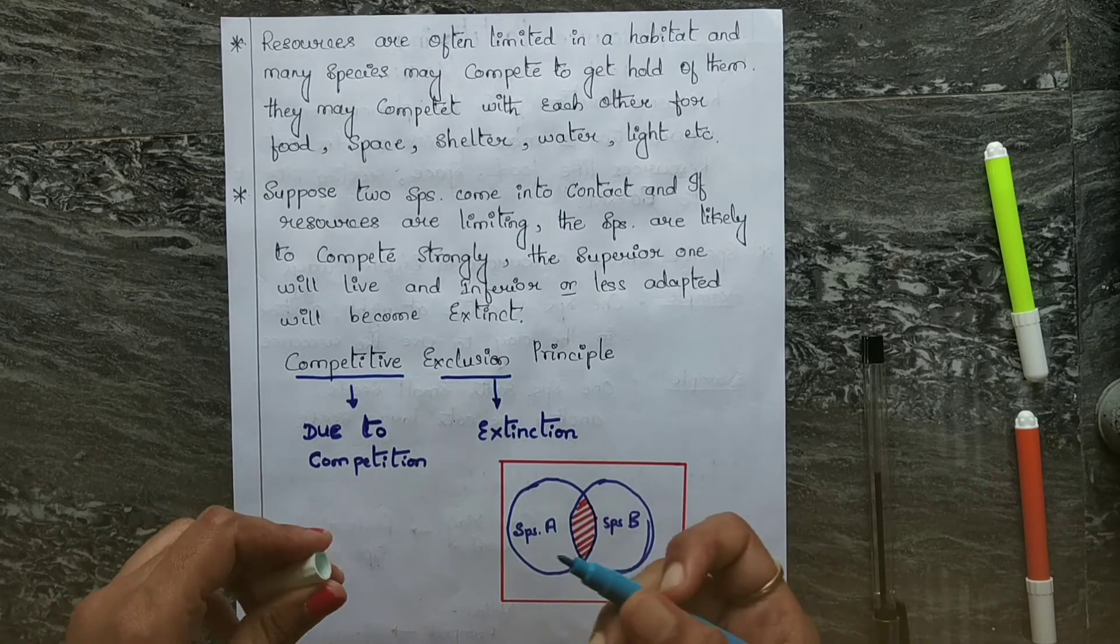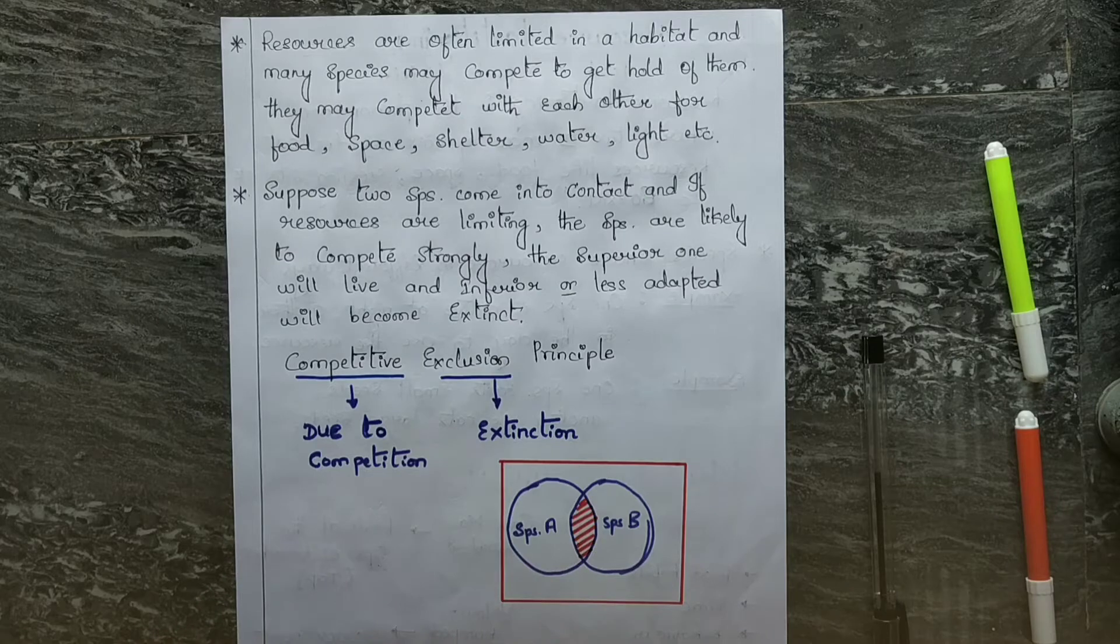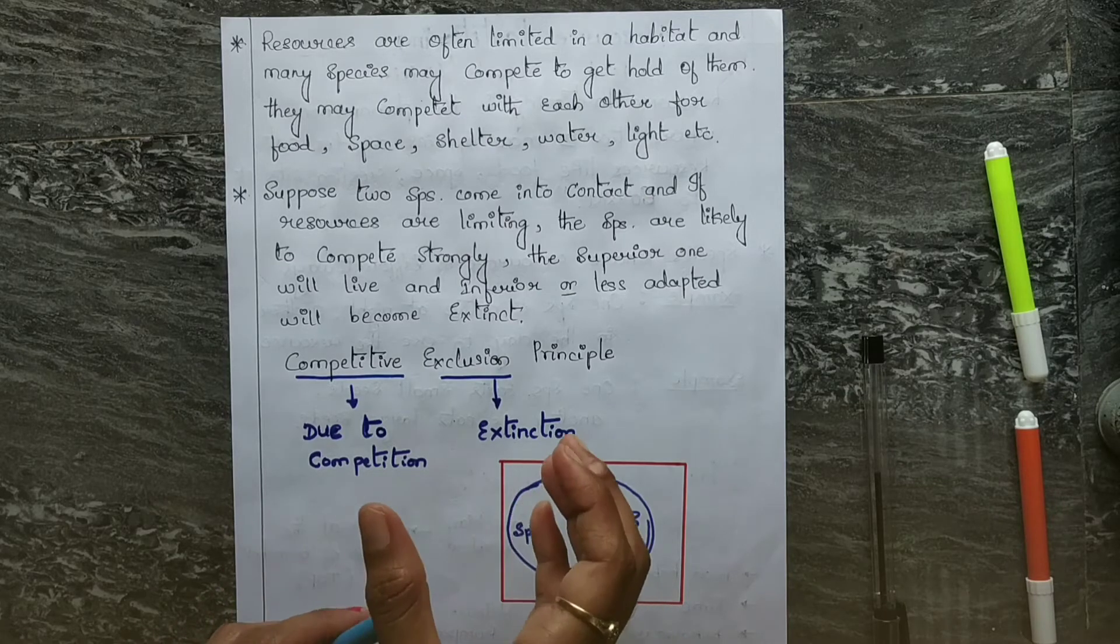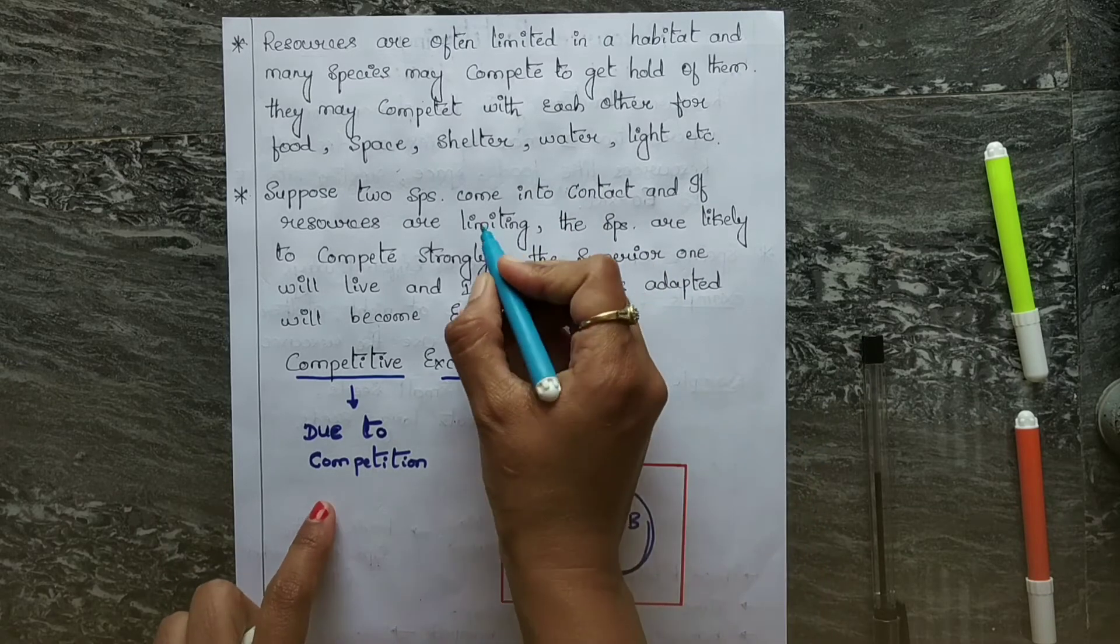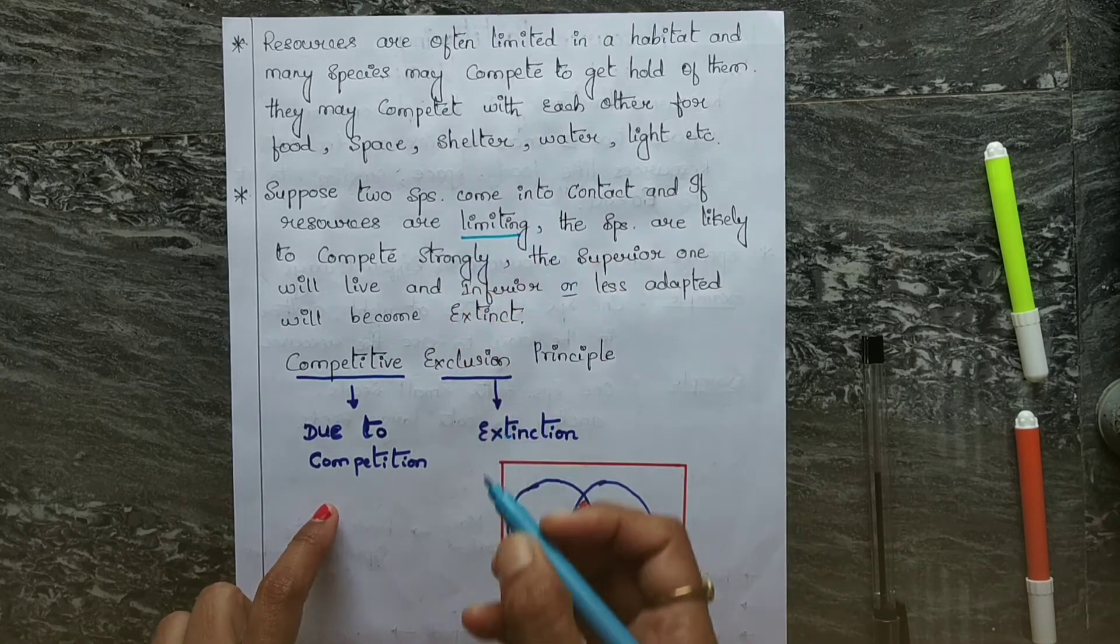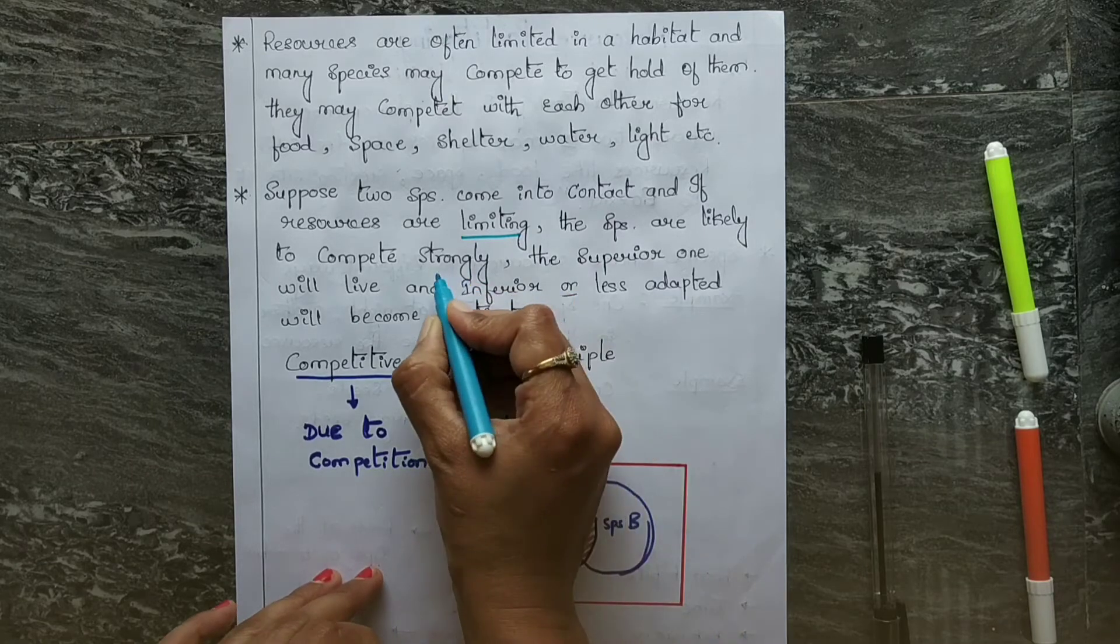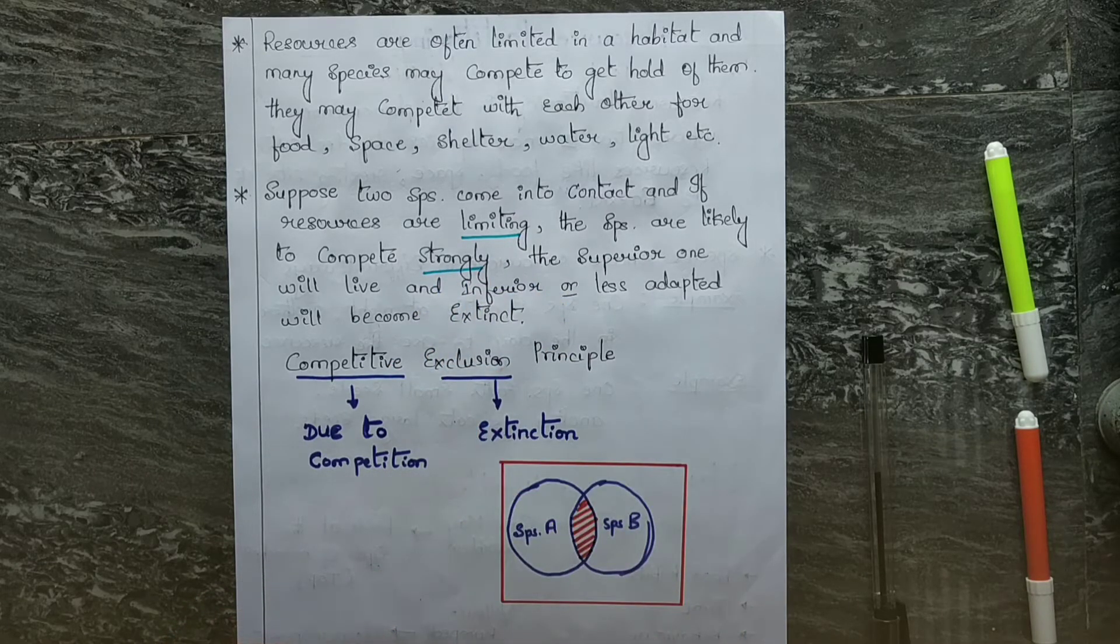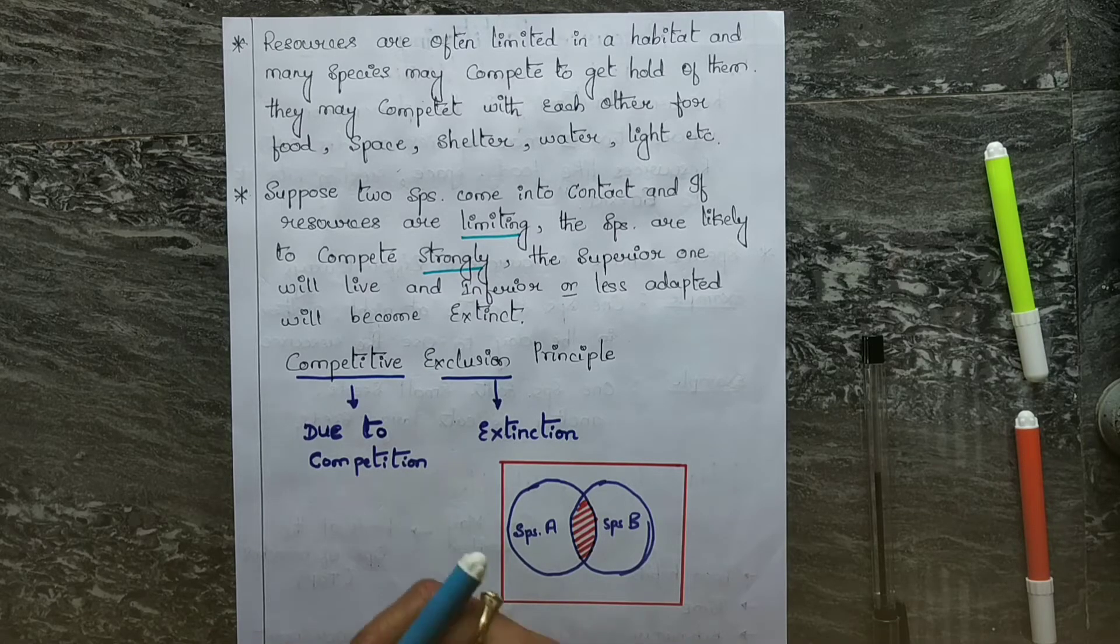Suppose two species come into contact and live in the same area, and if the resources are limiting, the species are likely to compete strongly. The superior one will live and the inferior or less adapted will become extinct.